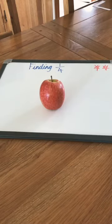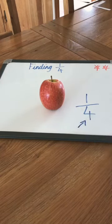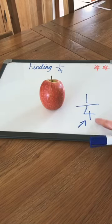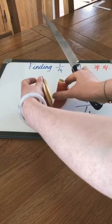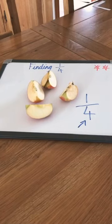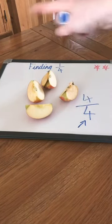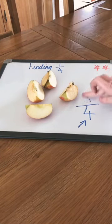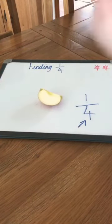Now we are going to find a quarter of an object. We've already found half of this apple. Think about how you could find a quarter. With two star challengers, think about how we can split this apple into four to find a quarter. The bottom number is called the denominator and we need to look at that to see how we need to split it. So we need to split this apple into four pieces and we only want one of them. It's already in half, so if we cut it again you will see it's in four. Now we have four quarters, and we want one quarter — we only want one of them. Take the rest of the apple away to get our one quarter.